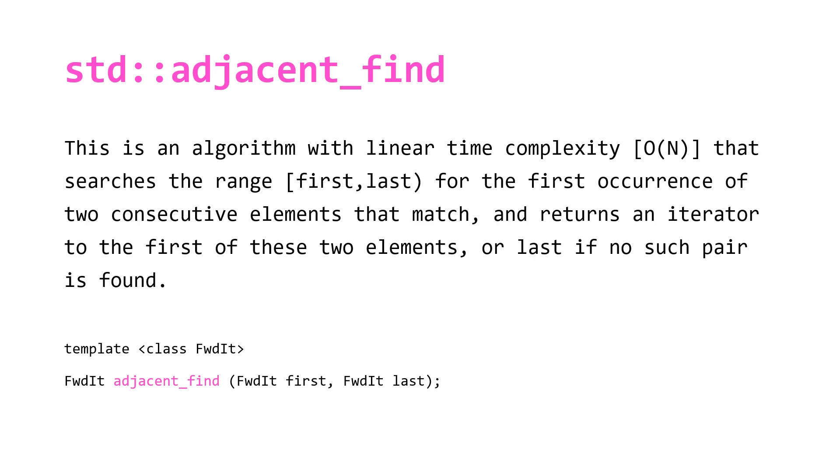You can see here that we have a templated function that returns a forward iterator and takes in two forward iterators first and last. Note that there is an overloaded version of this function that also takes in a binary predicate, which we will use to leverage this one algorithm that we're given.